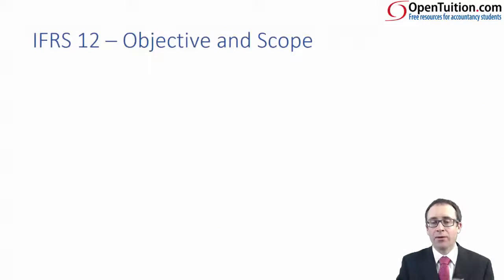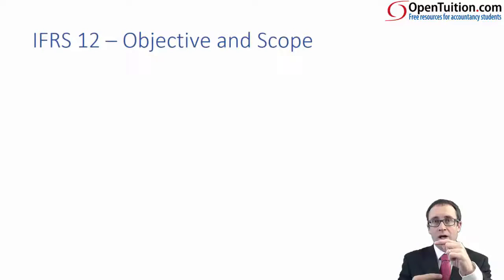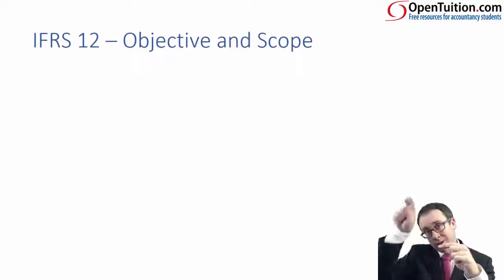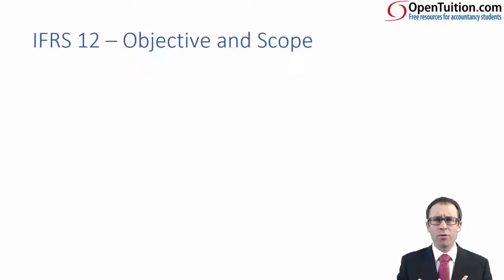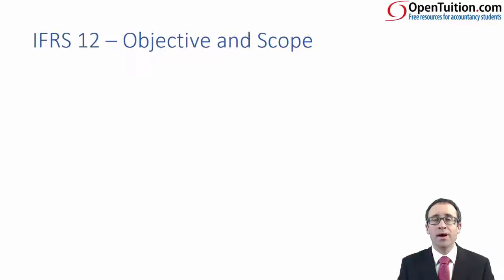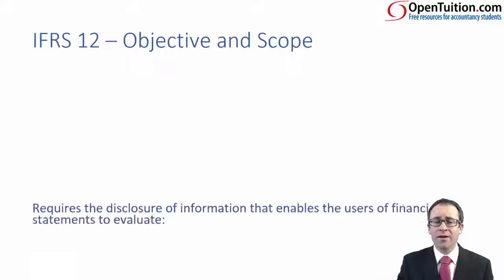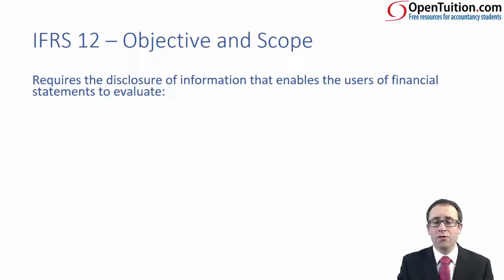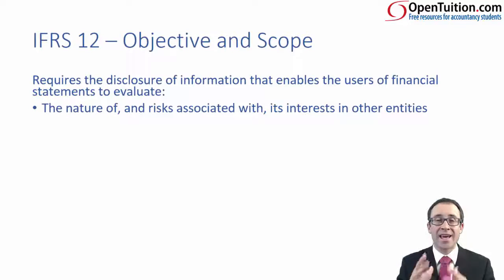What essentially is it all about — the objective and the scope? We've gone through and looked at various different group types of structure: a basic parent-subsidiary structure, a more complex group with a sub-subsidiary, and a D-shaped group. We've also spoken about the influence of an associate, control, and joint control. There are all sorts of different accounting treatments depending upon the level of ownership and the rights and powers you have with regard to directing or having influence over those activities. The reason we have IFRS 12 is that it enables the users of financial statements to look at those entities you have accounted for and examine the nature and the risks associated with that investment.